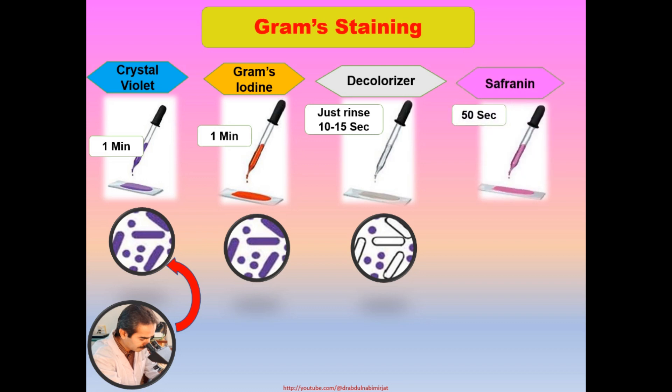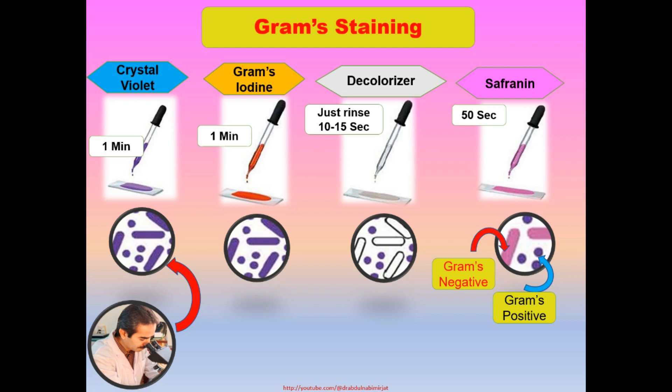After the decolorizer, the secondary dye safranin will be applied for just 50 seconds. After 50 seconds, the slide will be washed with water. In this condition, all Gram-positive bacteria will still retain the primary dye crystal violet and show the purple-blue color. And the Gram-negative bacteria, which became colorless during decolorization, will now retain the color of secondary dye safranin and show pink color.